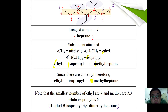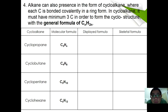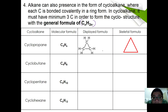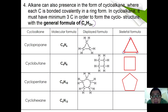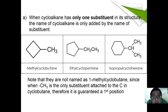Alkanes can also exist as cycloalkane, where each carbon is bonded covalently in a ring form. A cycloalkane must have a minimum of three carbons to form a cyclic structure, and has the general formula CnH2n. For example, cyclopropane has three carbons — remember in a skeletal formula each edge has two hydrogens. Four carbons gives cyclobutane, five gives cyclopentane, and six gives cyclohexane.